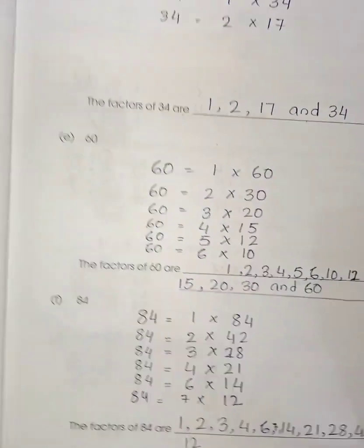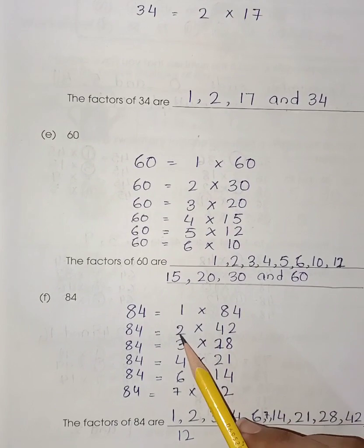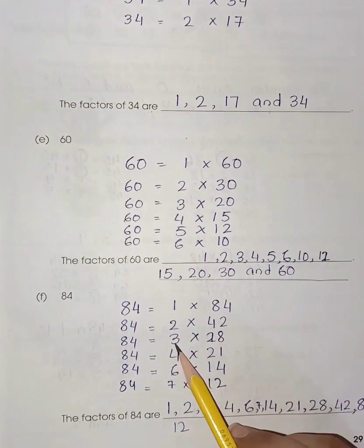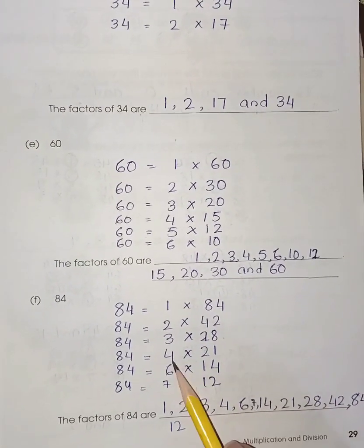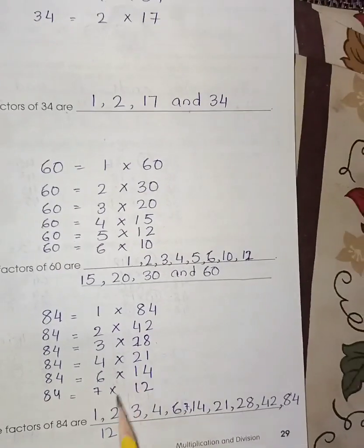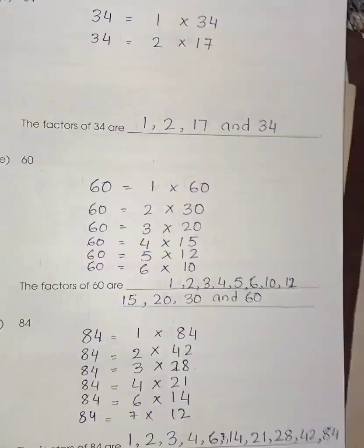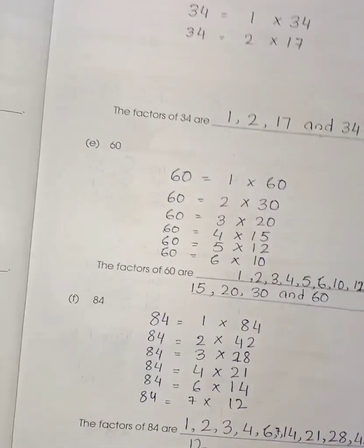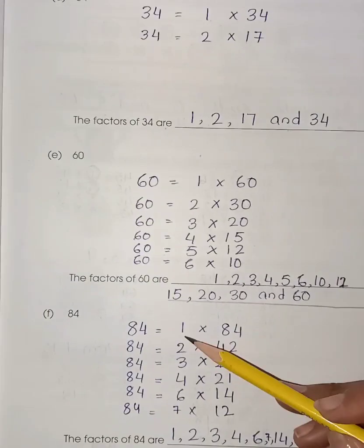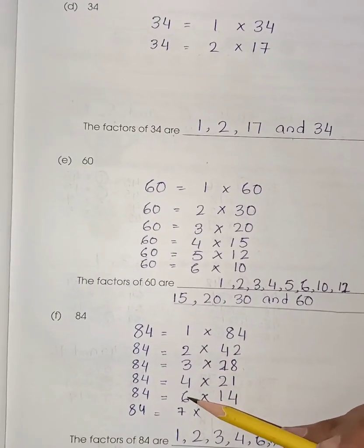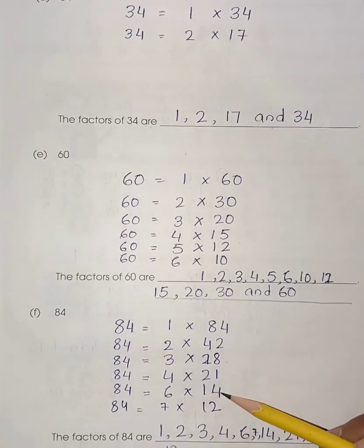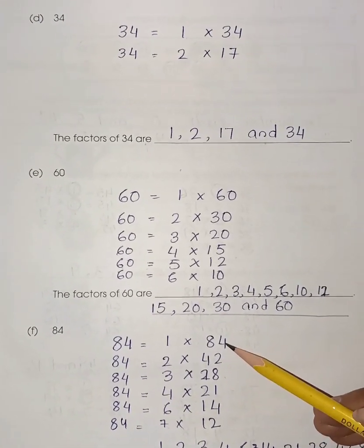Now 84. 1 multiplied by 84, 2 multiplied by 42, 3 multiplied by 28, 4 multiplied by 21, 6 multiplied by 14, 7 multiplied by 12. So the factors are 1, 2, 3, 4, 6, 7, 12, 14, 21, 28, 42 and 84.